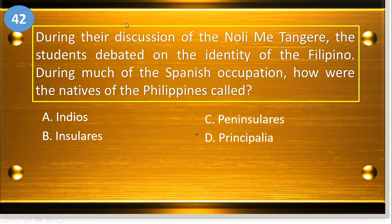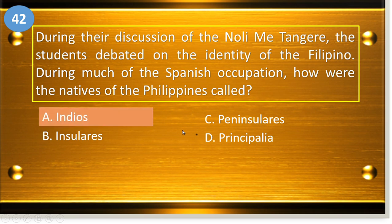Number forty-two: during their discussion, students debated on the identity of the Filipino. During much of the Spanish occupation, how were the natives of the Philippines called? A, Indios; B, Insulares; C, Peninsulares; and D, Principalia. The answer is Indios.